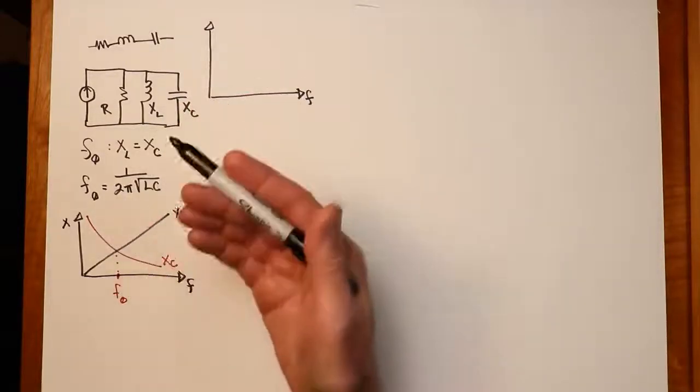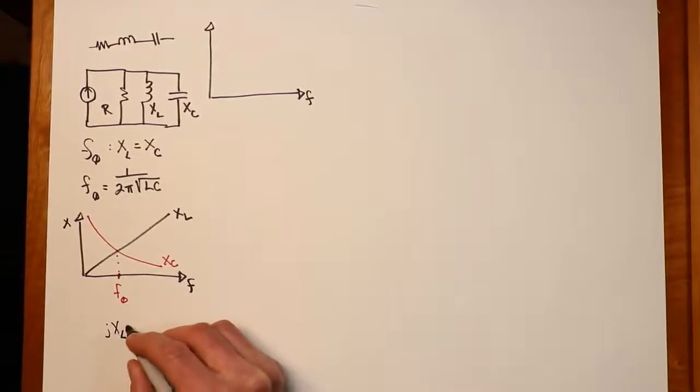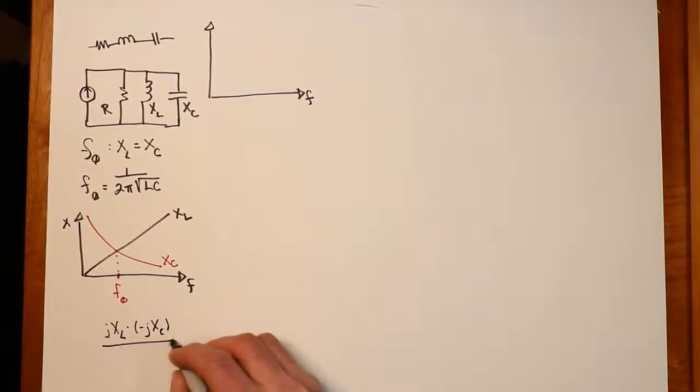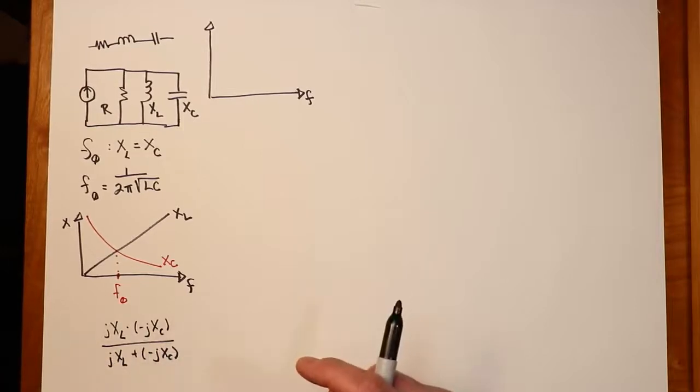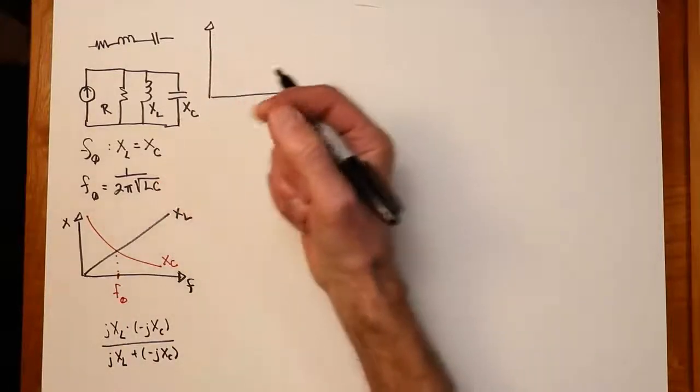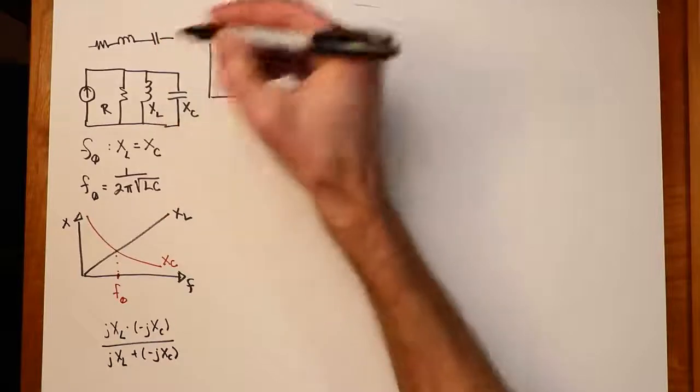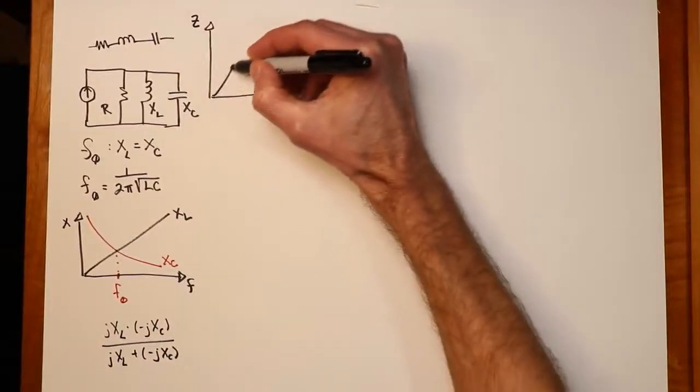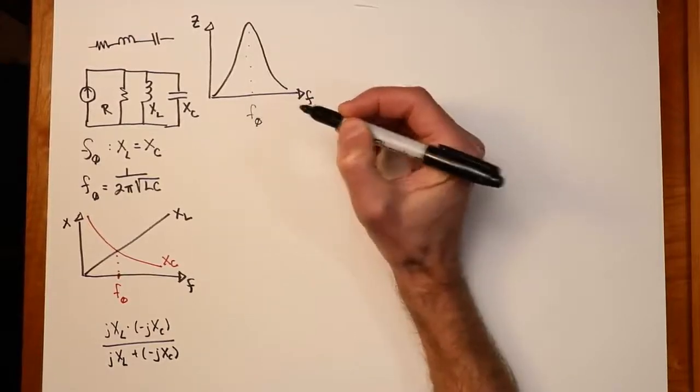If you just think about the product sum rule, if you said, I'll find the parallel combination as jXL times negative jXC divided by the sum, jXL plus negative jXC. Now what we see here is as the frequency approaches F0, the denominator here approaches zero. These things cancel, which means this result approaches infinity. And what we would be left with in that case is just the value of R. You'd have R basically in parallel with this pair which is approaching infinity. So the impedance does something along this line. It comes up to a peak and then drops off. This is your center frequency, your F sub zero.